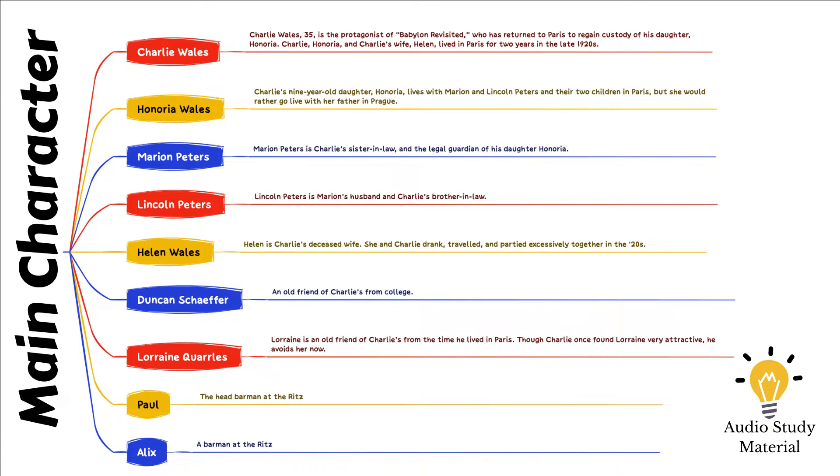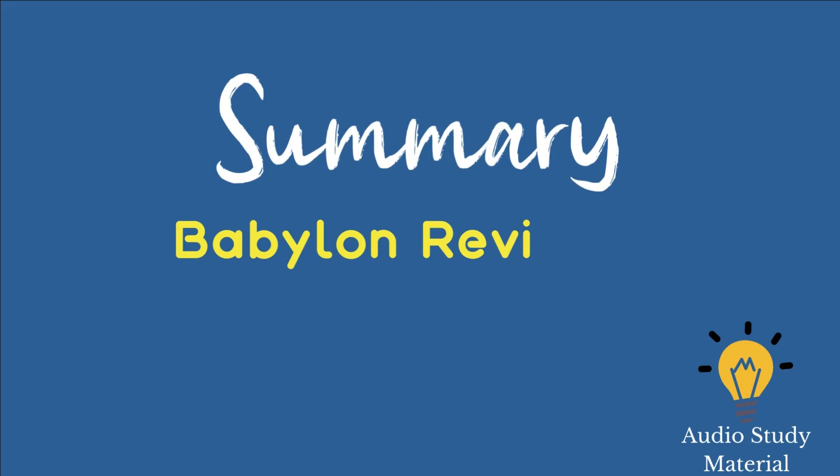Charlie explains that he never takes more than one drink in the afternoon. Charlie and Marion have an apparent and instinctive dislike, but Charlie believes Marion's aggression will give him the upper hand in the talk he came to Paris to have.